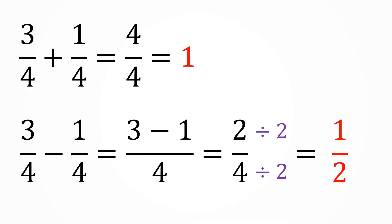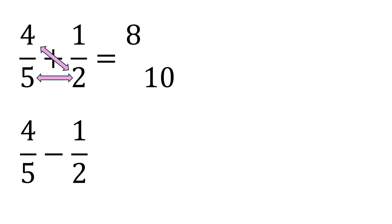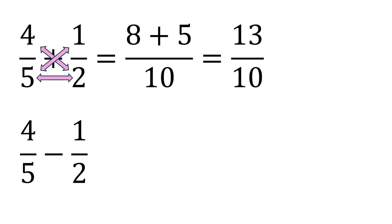Now for dissimilar fractions — fractions that don't have the same denominator. Our given has two different denominators: five and two. We cannot simply add the numerators directly. So we multiply the two denominators: five times two is ten. Then we cross-multiply: four times two is eight, put it on top; and five times one is five on the other side. Copy the operation plus, then combine the top: eight plus five is thirteen, and copy the denominator ten.